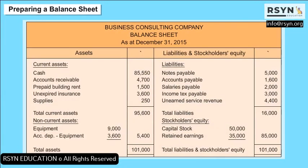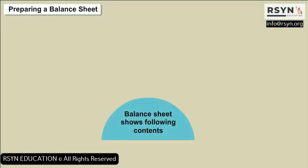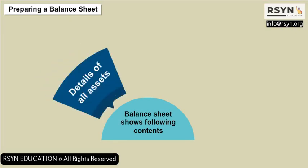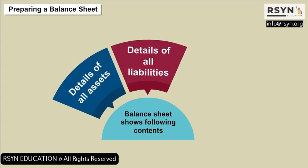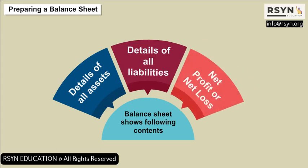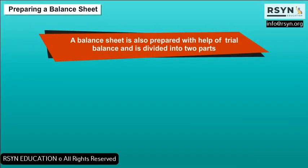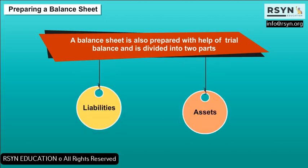Preparing a Balance Sheet: The balance sheet shows the following contents — details of all assets, details of all liabilities, and net profit or net loss. A balance sheet is also prepared with the help of a trial balance and is divided into two parts: liabilities and assets.